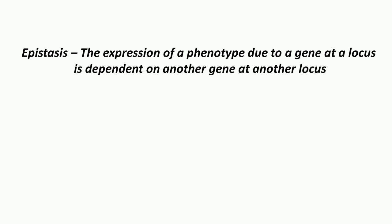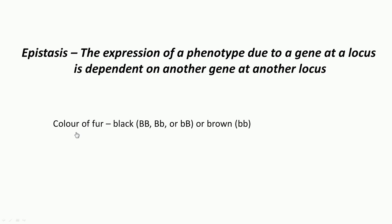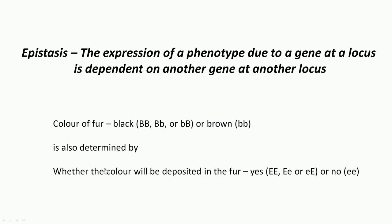Epistasis arises when the expression of a phenotype due to a gene at one locus is dependent on another gene at another location — expression of one is dependent on the other. Again, this is clearly non-Mendelian. An example is the color of fur: it could be black, arising from a dominant B allele, or brown from the double recessive small b. But whether the color itself is expressed — deposited in the fur — is determined by a separate gene, also dominant or recessive.